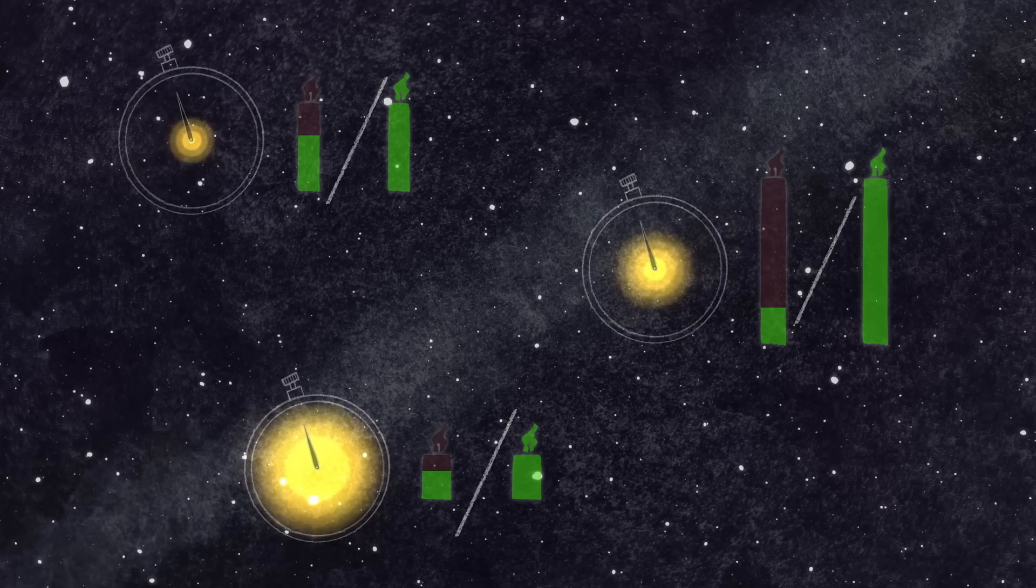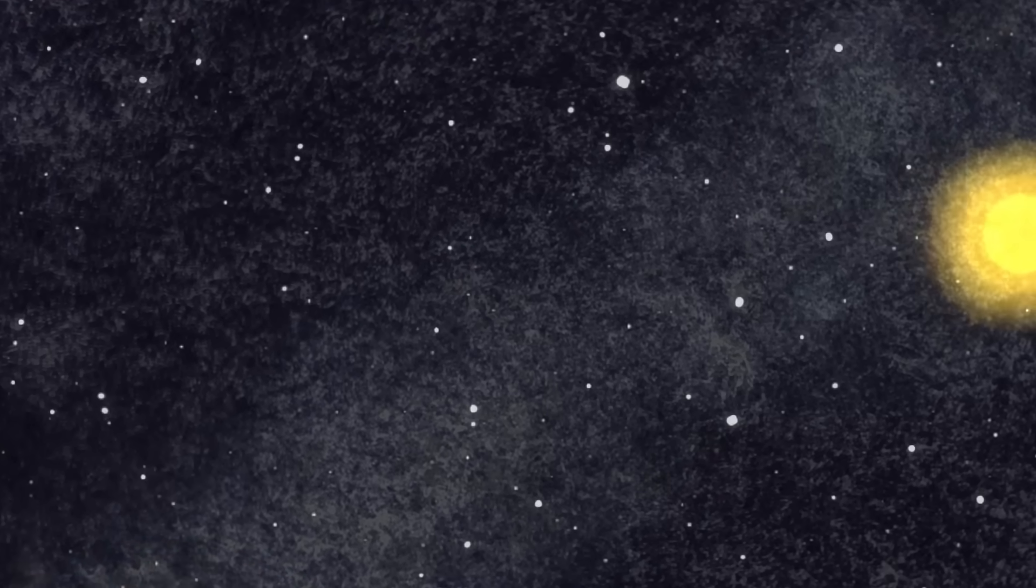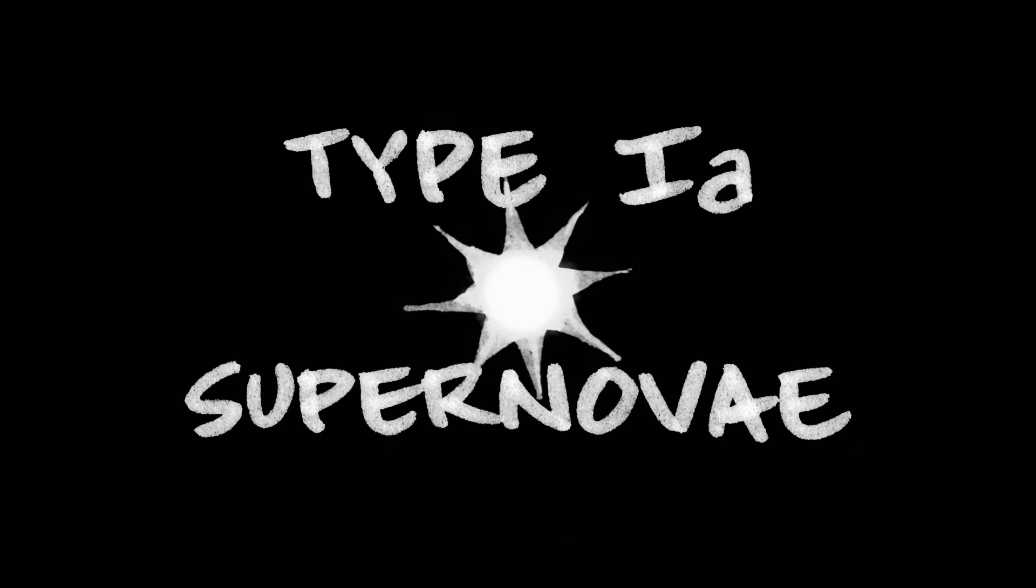Unfortunately, this is still not the end of the story. We can only observe individual stars up to about 40 million light-years away, after which they become too blurry to resolve. But luckily, we have another type of standard candle, the famous Type Ia supernova.